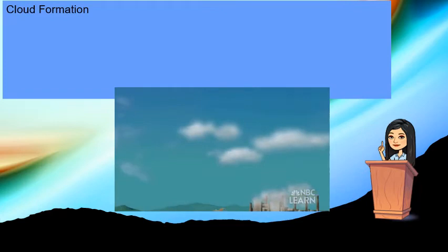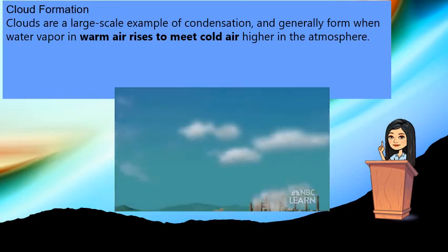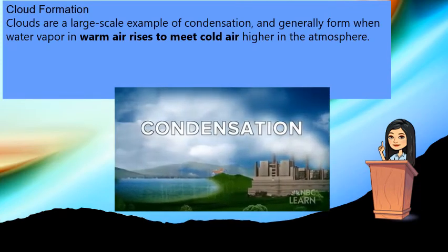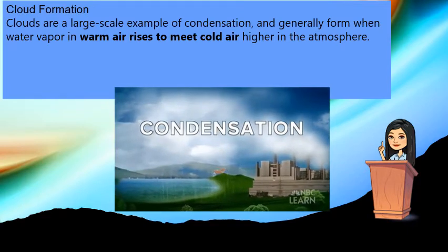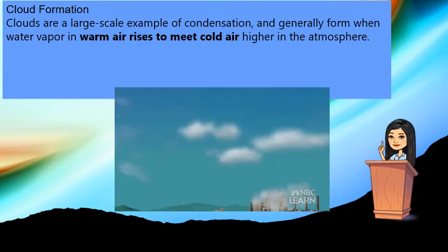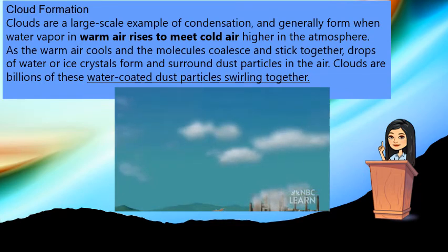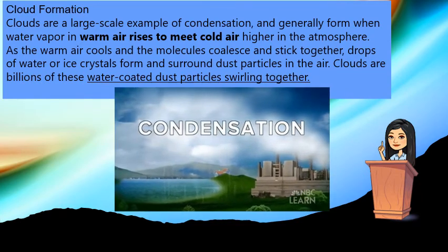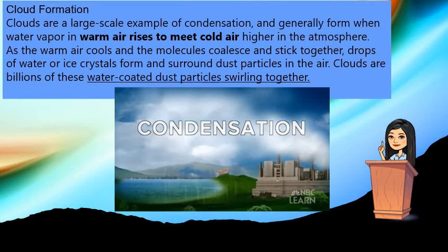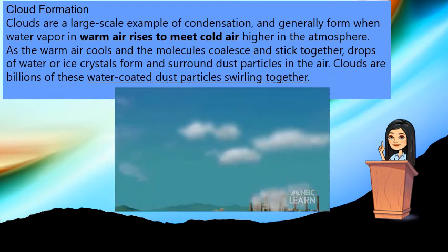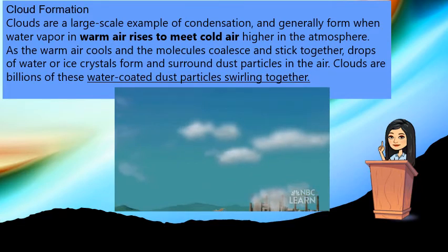Clouds are a large-scale example of condensation and generally form when water vapor in warm air rises and meets cold air. As the warm air cools and the molecules coalesce and stick together, drops of water or ice crystals form and surround dust particles in the air. Clouds are actually billions of these water-coated dust particles swirling together.